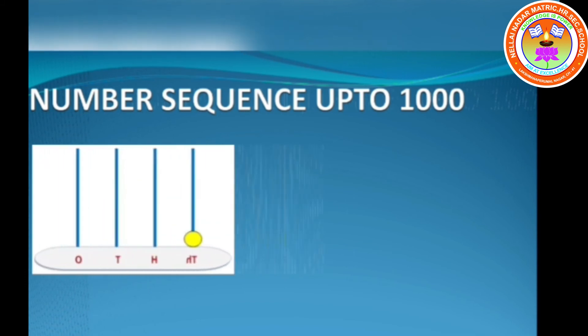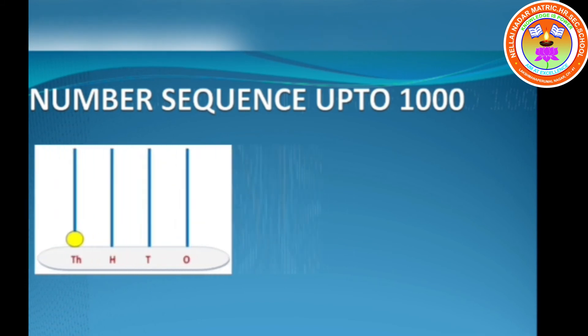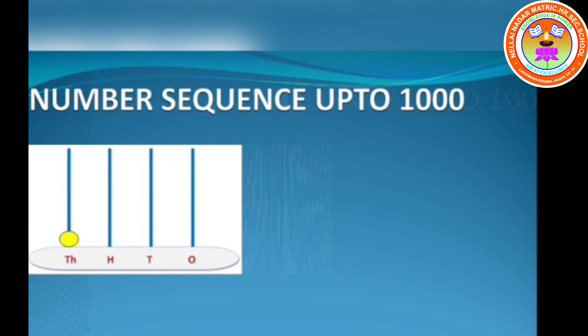Let us now see the representation of 1000 on an abacus. In 1000, there are no beads in the ones place — so write zero in the ones place. There are no beads in the tens place — so write zero in the tens place. There are no beads in the hundreds place — so write zero in the hundreds place. Can you see one bead in the next place? That is the 1000s place. 1000 comes after the hundreds place.